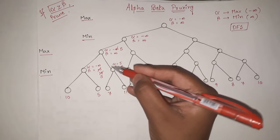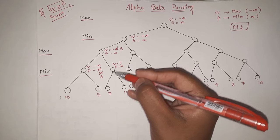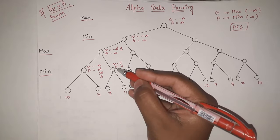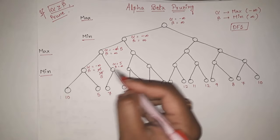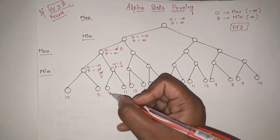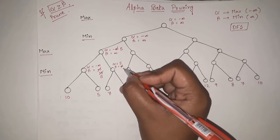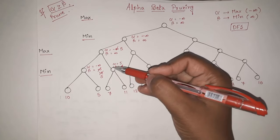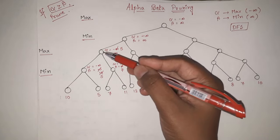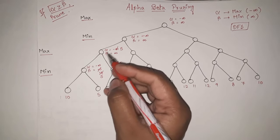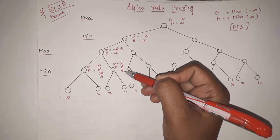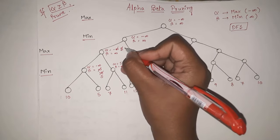After this node, we are going to the next leaf with value 7. In this min level, we update beta. Out of infinity and 7, the minimum is 7. So beta is updated to 7. Then we come back up to the max level and update alpha. Out of 5, 5, and 7, the maximum value is 7. So alpha is updated to 7.